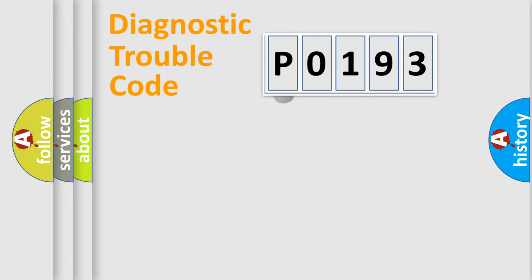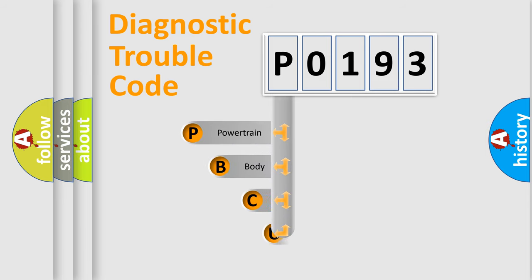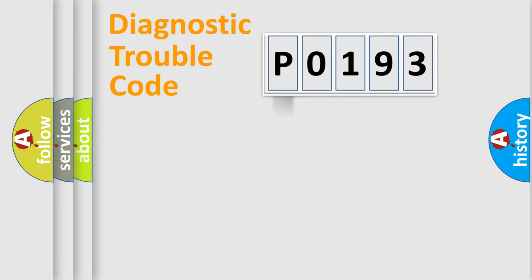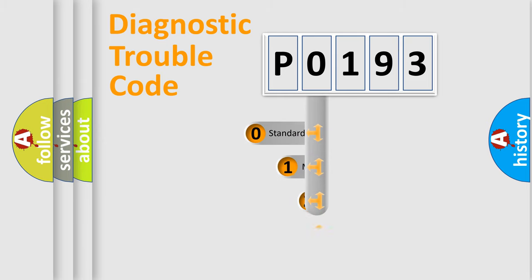First, let's look at the history of diagnostic fault code composition according to the OBD2 protocol. We divide the electric system of an automobile into four basic units: powertrain, body, chassis, and network. This distribution is defined in the first character of the code.